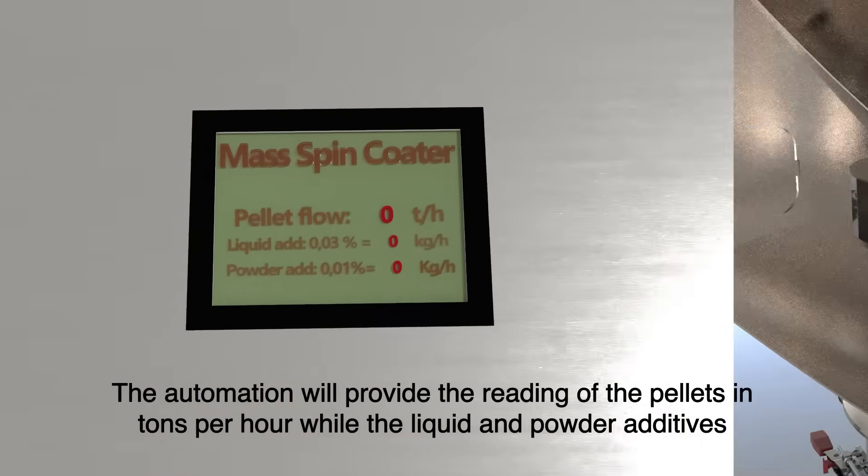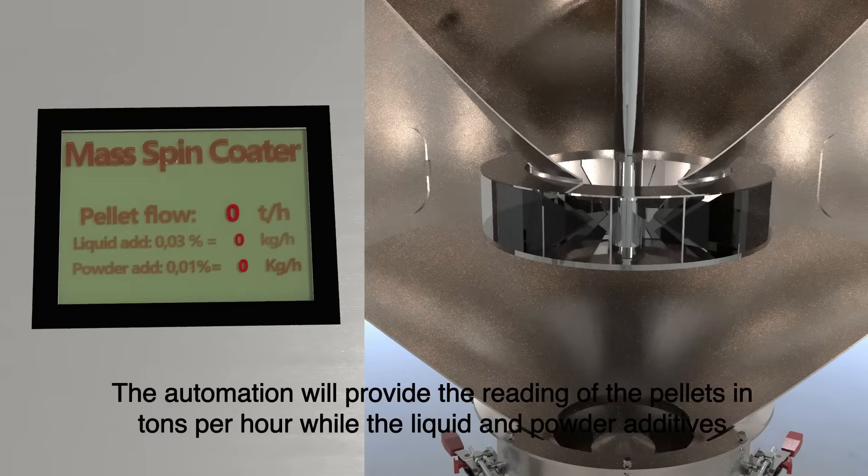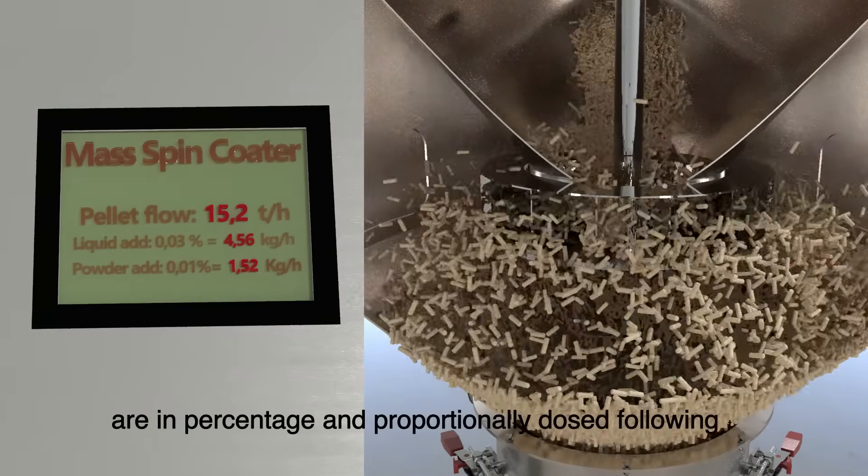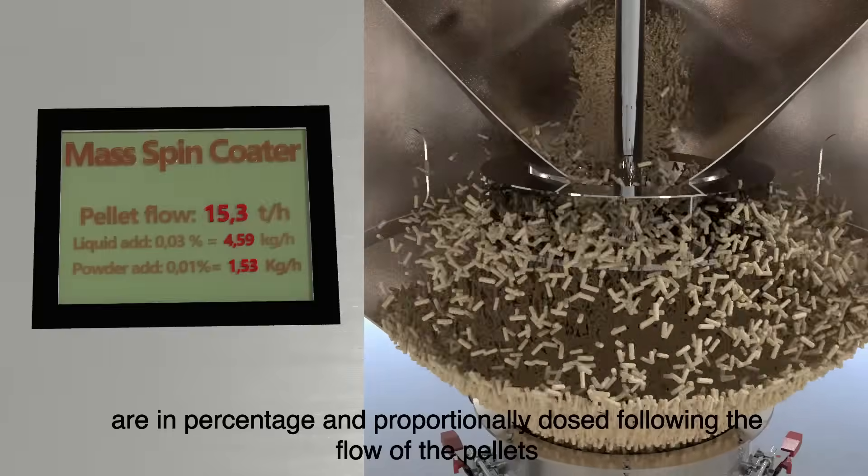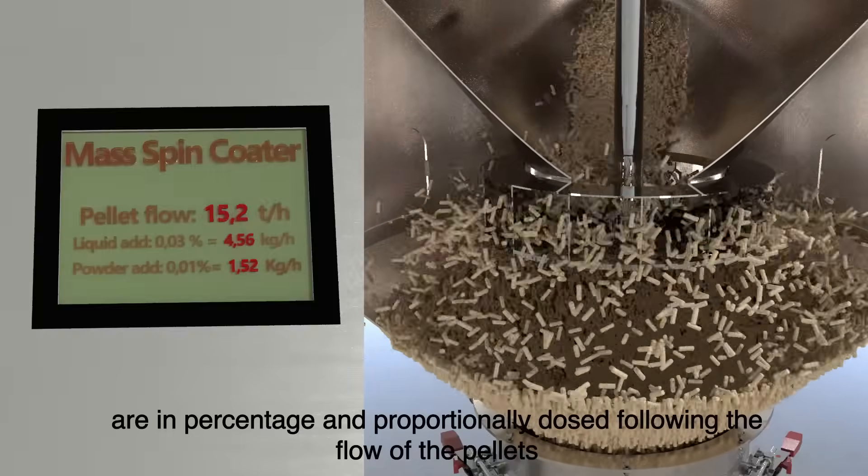The automation will provide the reading of the pellets in tons per hour, while the liquid and powder additives are in percentage and proportionally dosed following the flow of the pellets.